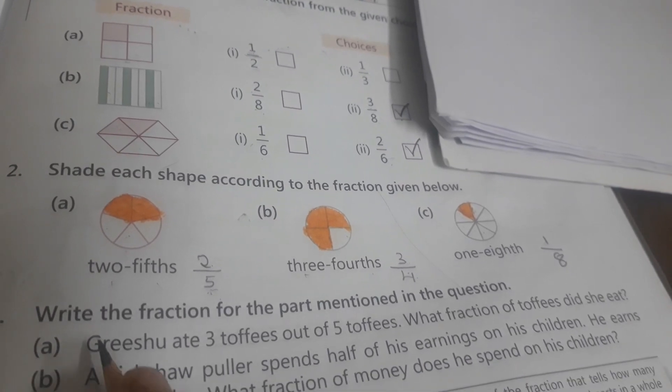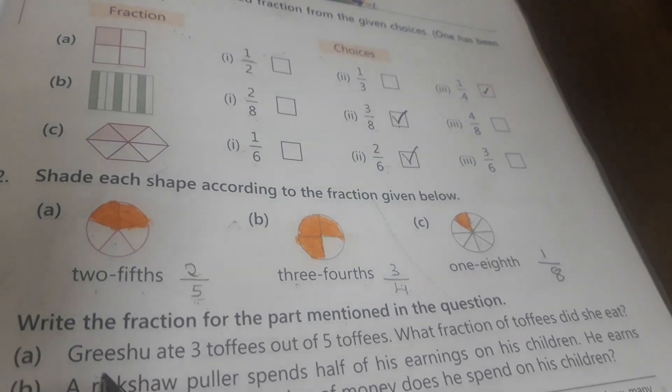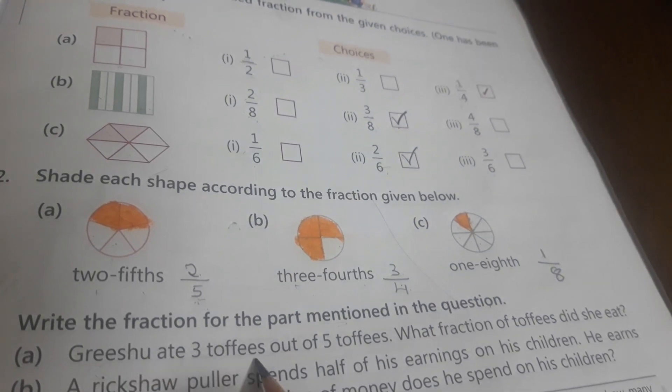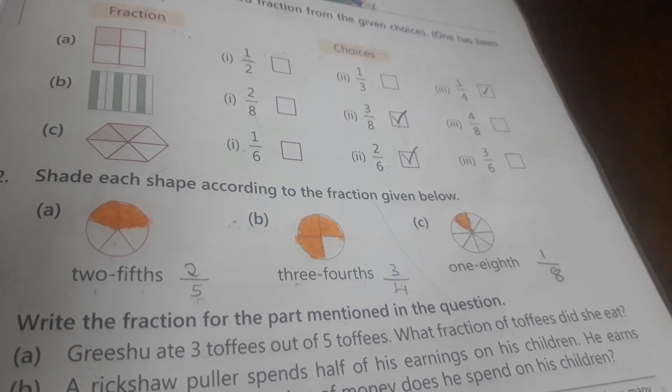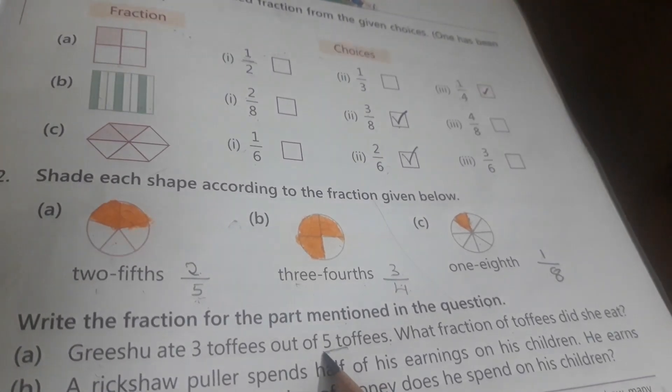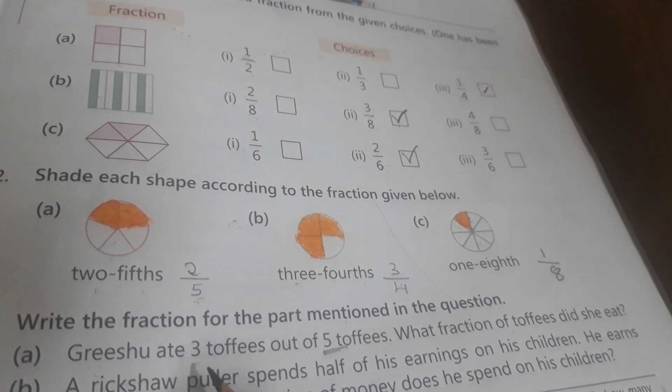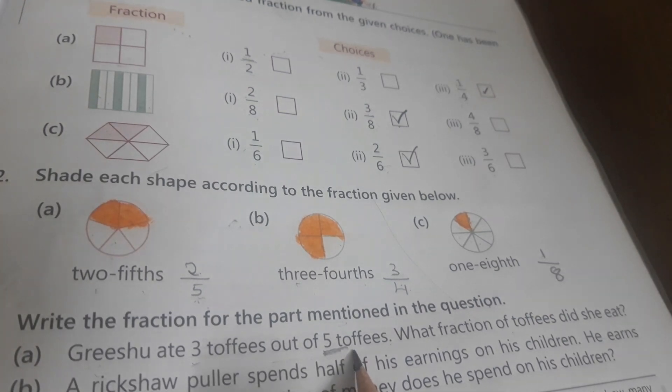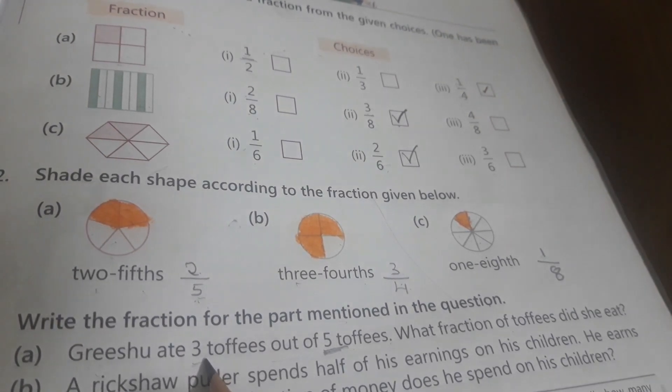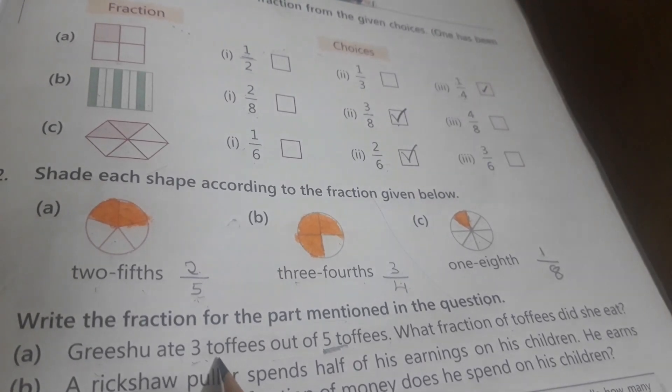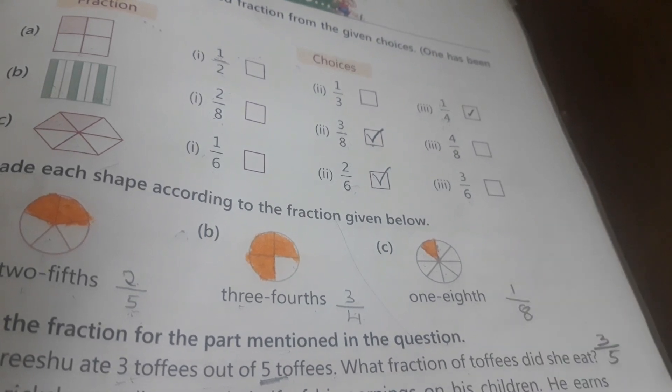Now third question. Write the fraction for the parts mentioned in the question. Here we have to write the fraction. Grishu ate 3 toffees out of 5 toffees. What fraction of toffees did she eat? Total is 5. Total number of toffees is 5, and number of toffees she ate is 3. Therefore the fraction is 3 by 5.